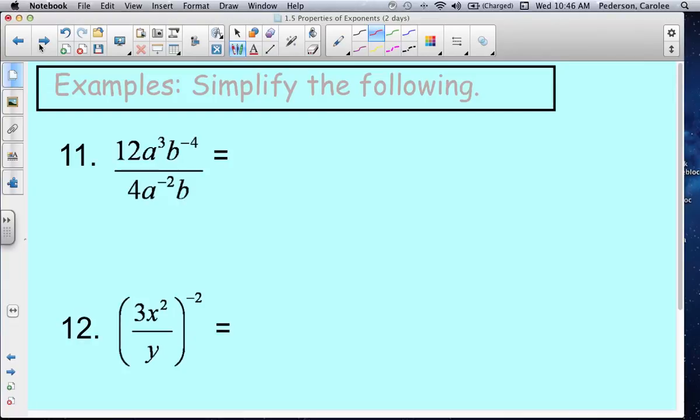Last set of examples, number 11. We have 12a cubed b to the negative 4th over 4a to the negative 2 times b.